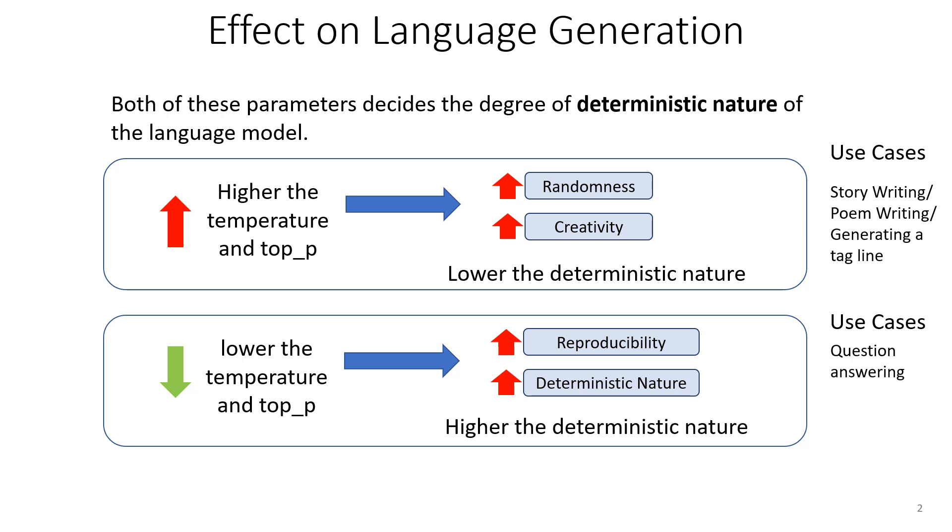On the other hand, if we set Temperature and Top_P to lower values, language generation will be more deterministic. Here, most probable words would take place. Basically, with the temperature zero, we can reproduce the same output for a given input prompt.